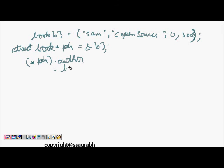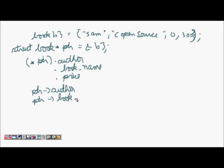Similarly the book name dot price, etc. But because pointers and structures are very much related, there is another arrow operator using which we can directly access the member functions. So ptr arrow book name and ptr arrow price. We can access all the member elements. So this ends our lesson.